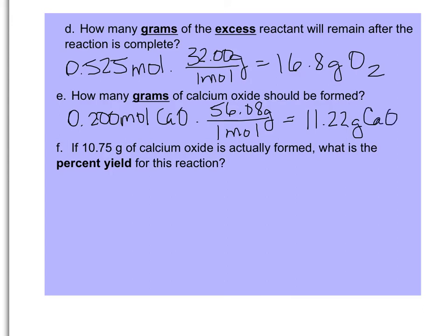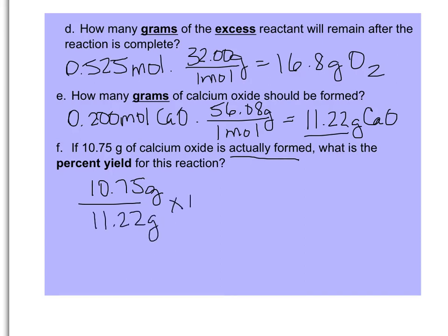The final question is a percent yield question. If 10.75 grams of calcium oxide is actually formed, what is the percent yield? The 10.75 grams is our actual yield. We divide that by our theoretical yield of 11.22 grams (calculated via stoichiometry), then multiply by 100 to get a percent. The result is 95.8%.